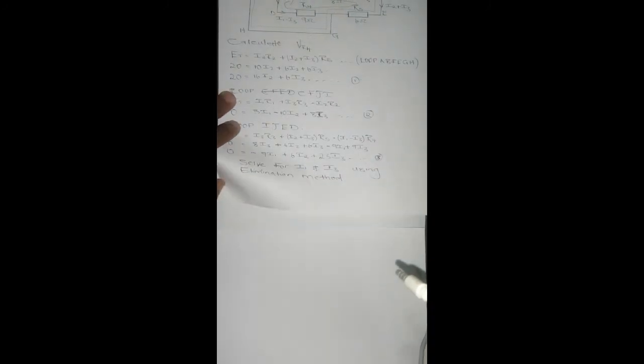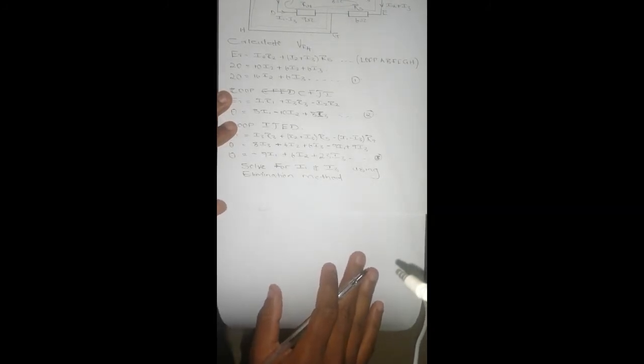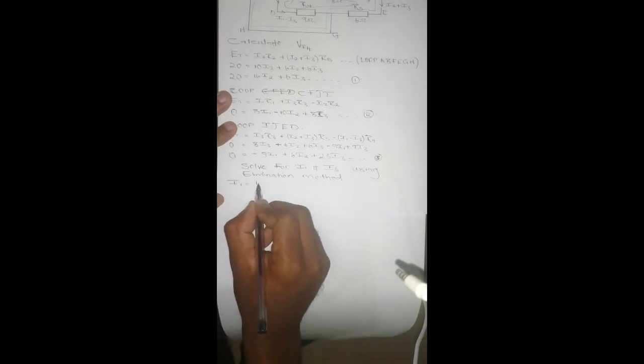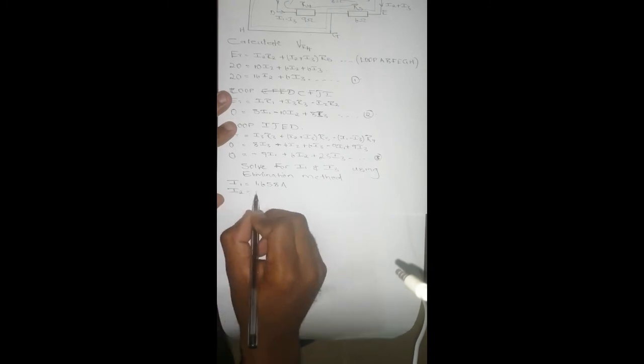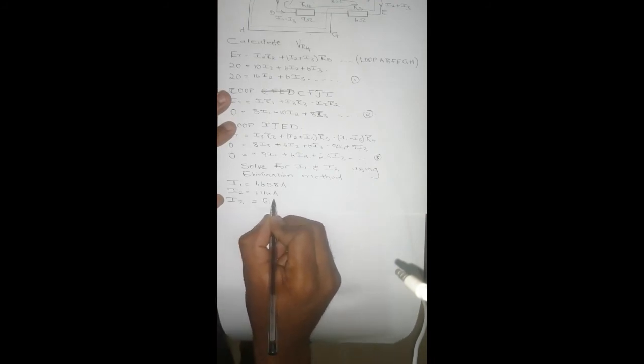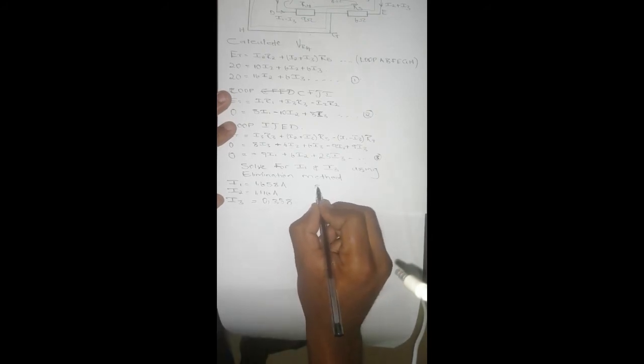If we do that, we're going to get I1 equals 1.658 amps, I2 equals 1.116 amps, I3 equals 0.358.